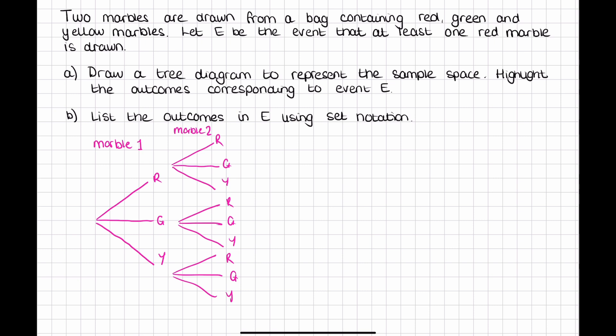Now it said highlight the outcomes corresponding to event E. So event E in the question is at least one red marble is drawn. So if we're going to highlight that at least one red marble, we could have this path, we could have the red and then the red. We could have a red first and a green or red first and yellow. We still have one red marble in all those three situations.